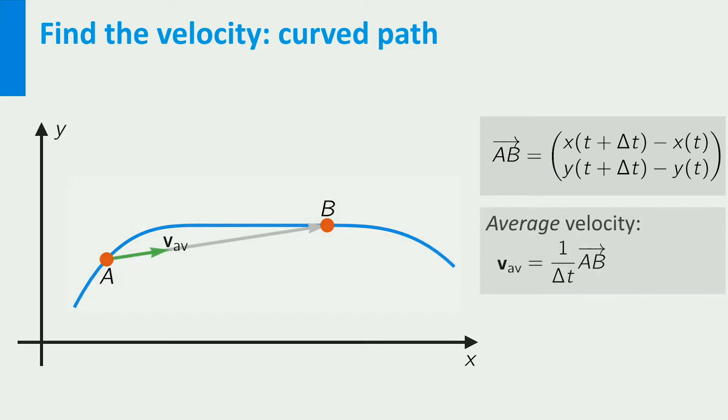This vector, divided by Δt, gives the average velocity in this time interval. It is an approximation of the velocity at time t.